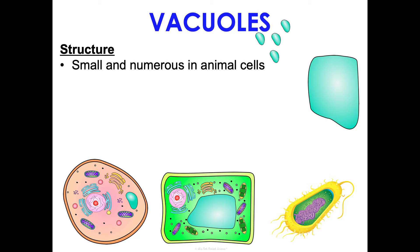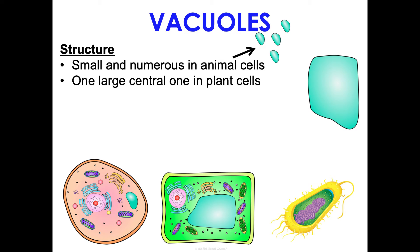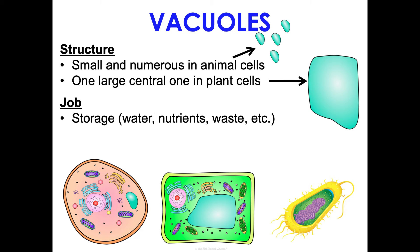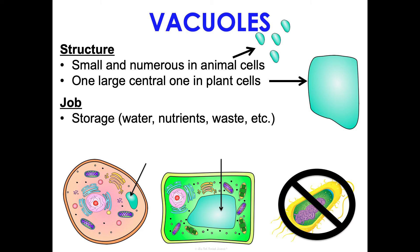Vacuoles are small and numerous in animal cells. In plant cells, there's typically just one large central vacuole. Their job is to store water, nutrients, waste, and so on — they store things.